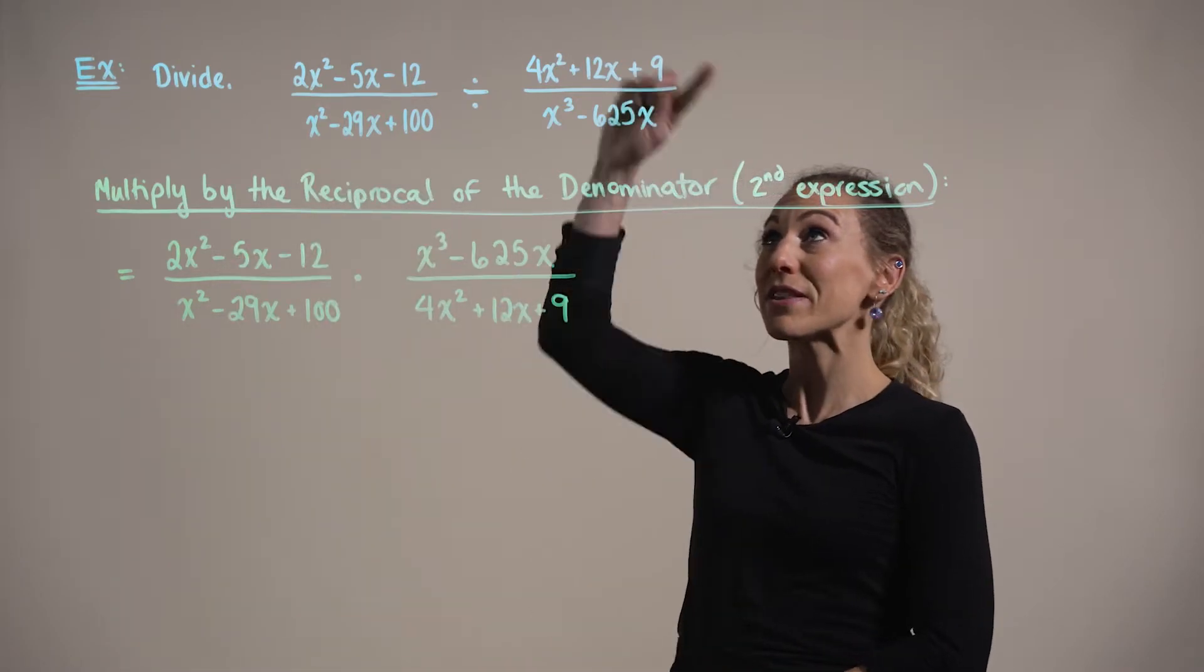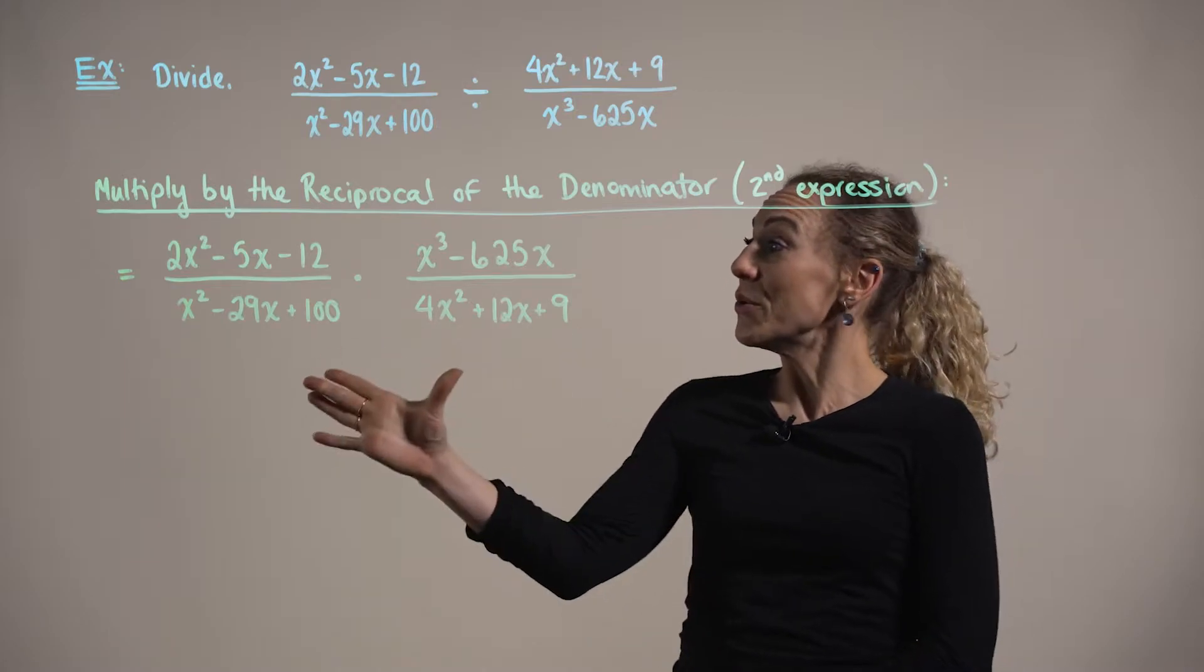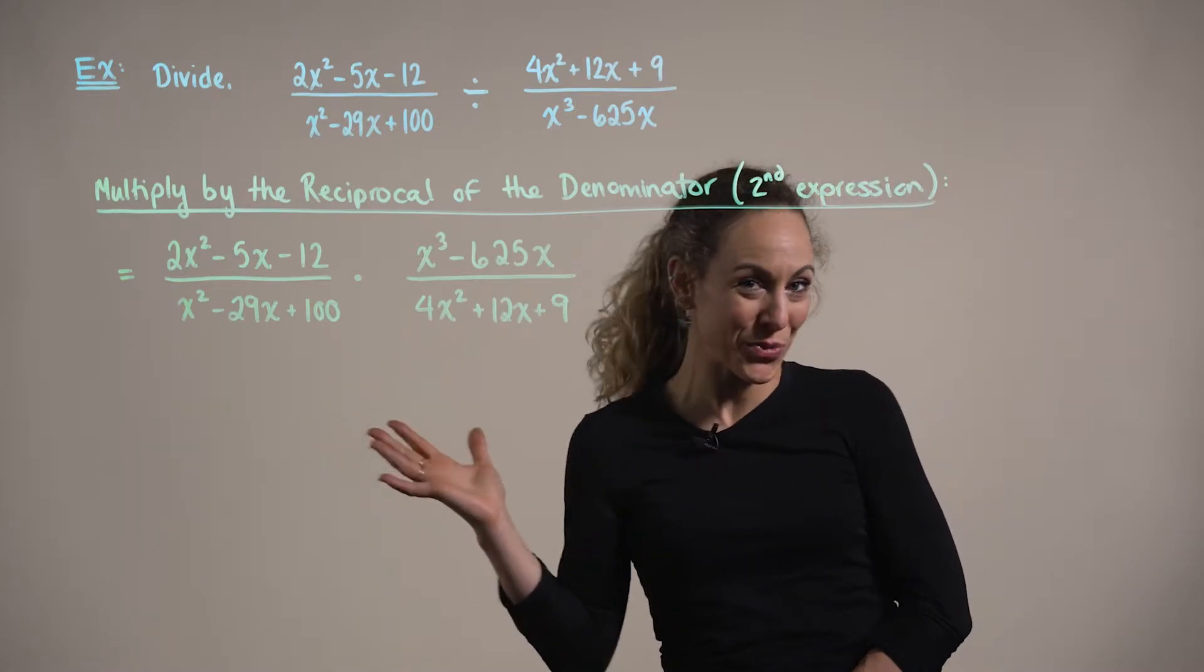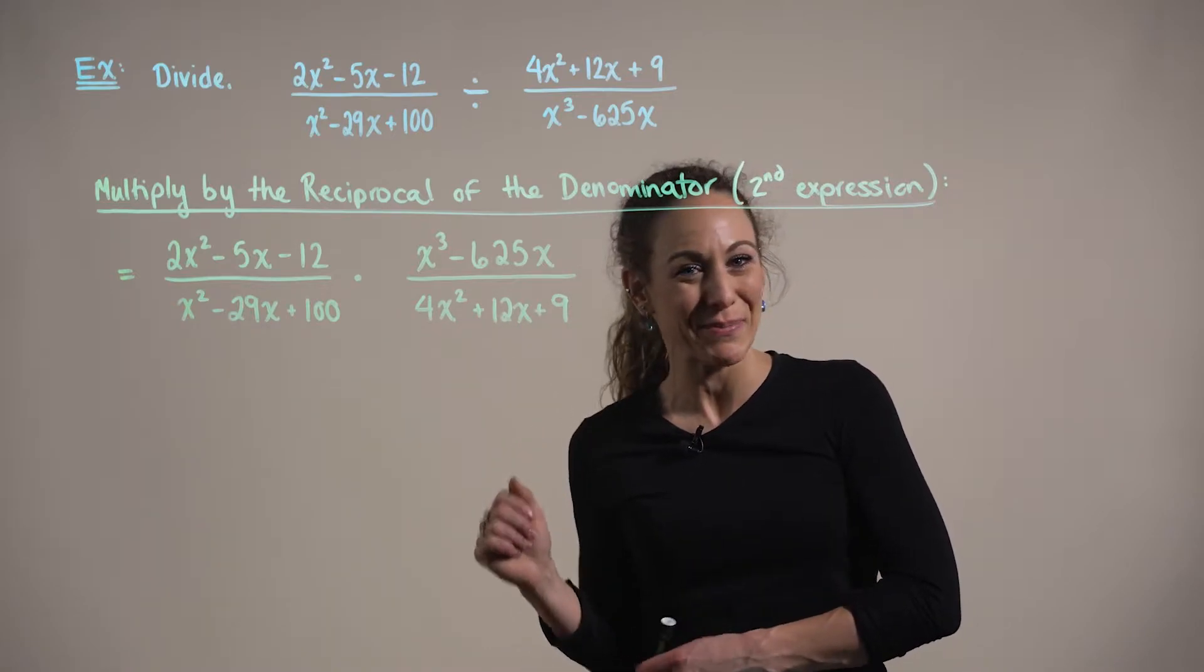So now that we've multiplied by the reciprocal of the denominator, or that second rational expression, notice that we've changed this division with rational expressions into simply a multiplication with rational expressions.